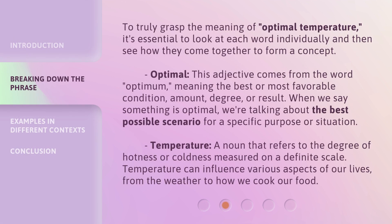To truly grasp the meaning of optimal temperature, it's essential to look at each word individually and then see how they come together to form a concept. Optimal — this adjective comes from the word optimum, meaning the best or most favorable condition, amount, degree, or result. When we say something is optimal, we're talking about the best possible scenario for a specific purpose or situation.